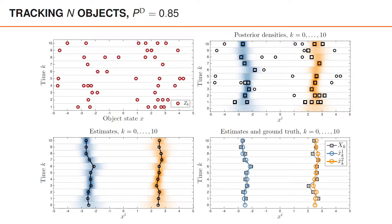Here, we've illustrated the measurements and the posterior densities together with estimates and ground truth, just like we did for GNN. Top left, we have the measurements, and top right is the posterior densities shown as heat maps. We can see that in some time steps, a single measurement has a very high association probability. For example, for object two on the right at times three, four, and five.